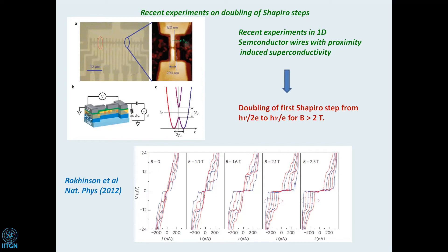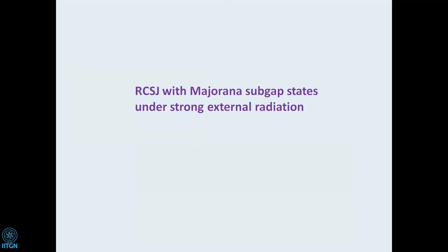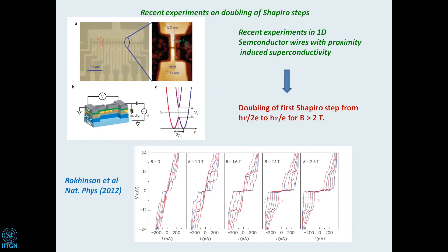So the Josephson effect essentially gives two signatures of the Majorana fermion. One is the fractionalization of the Josephson frequency — it becomes ω/2 instead of ω — and the other is the disappearance of odd Shapiro steps so that only even Shapiro steps survive. These are the experimental signatures of the fractional Josephson effect.